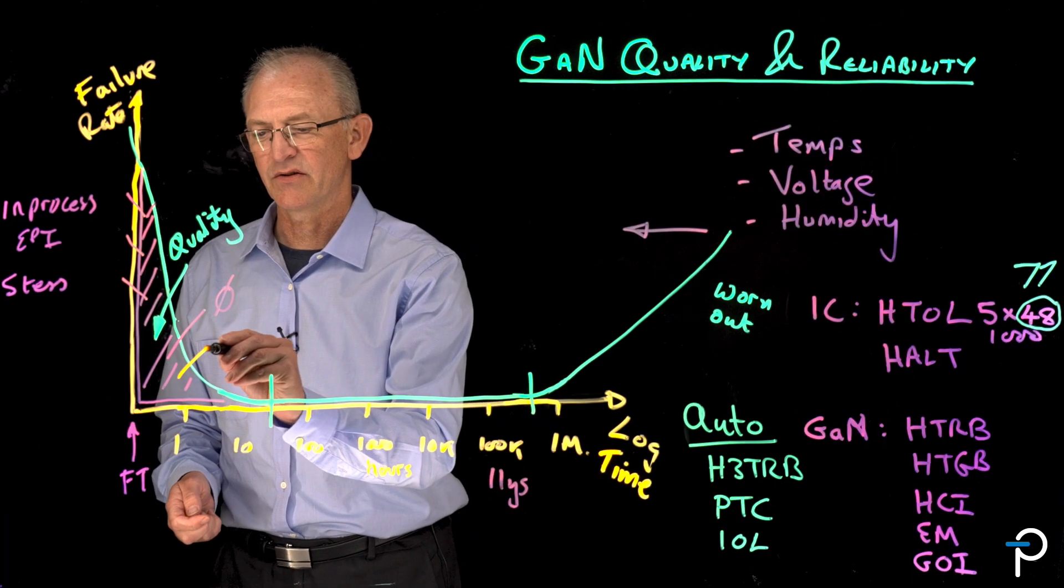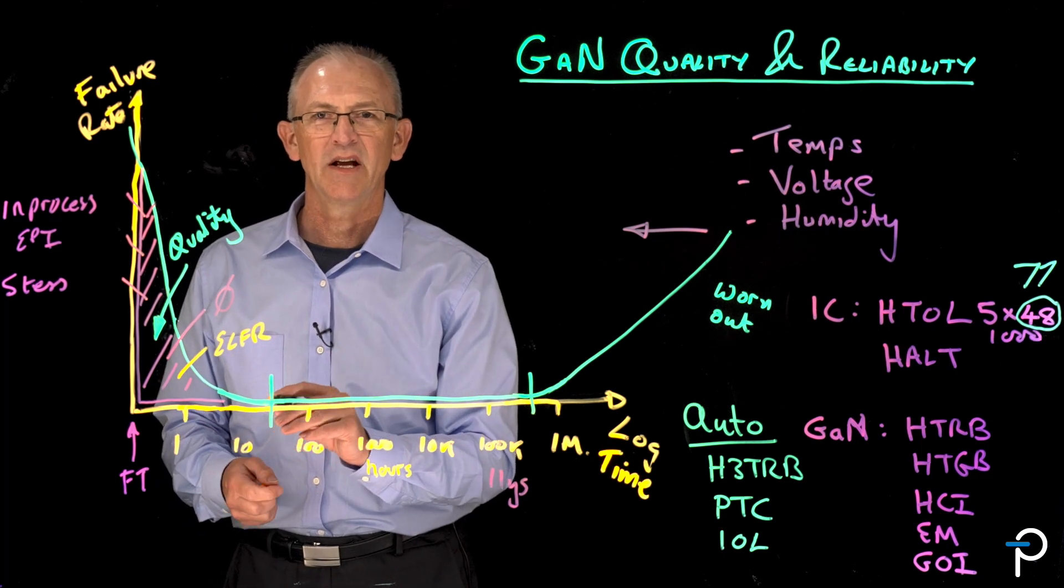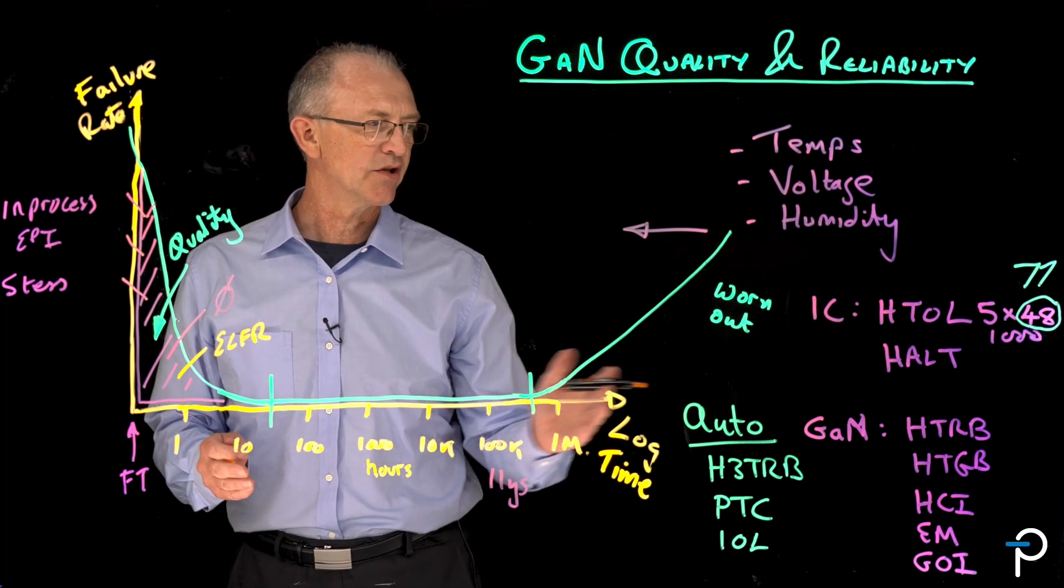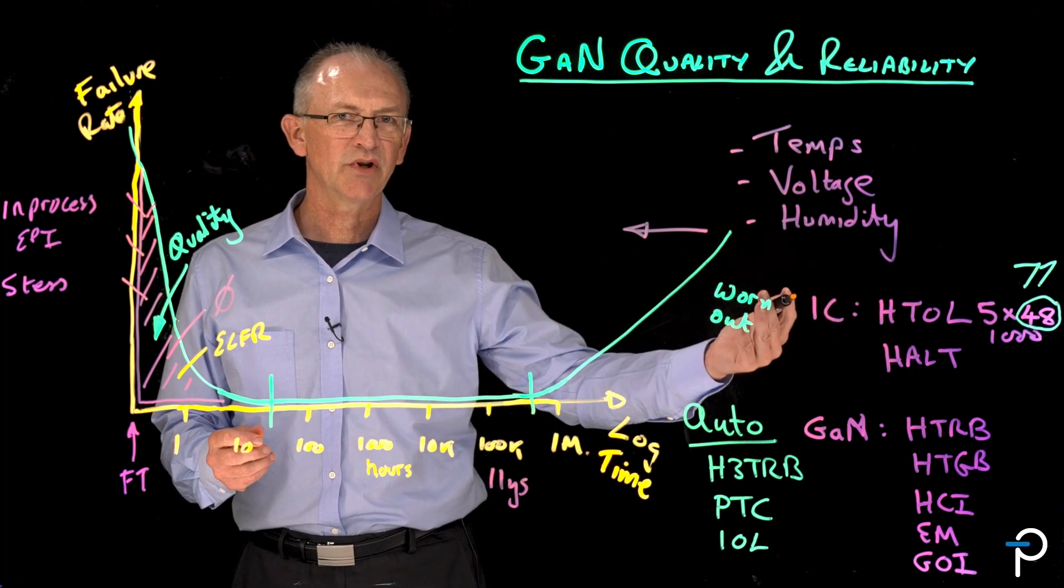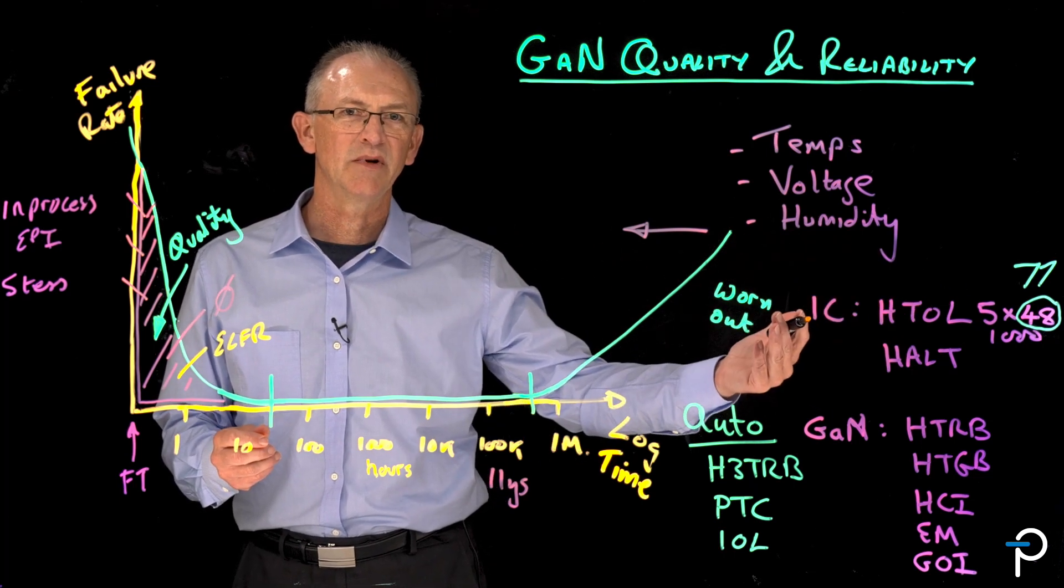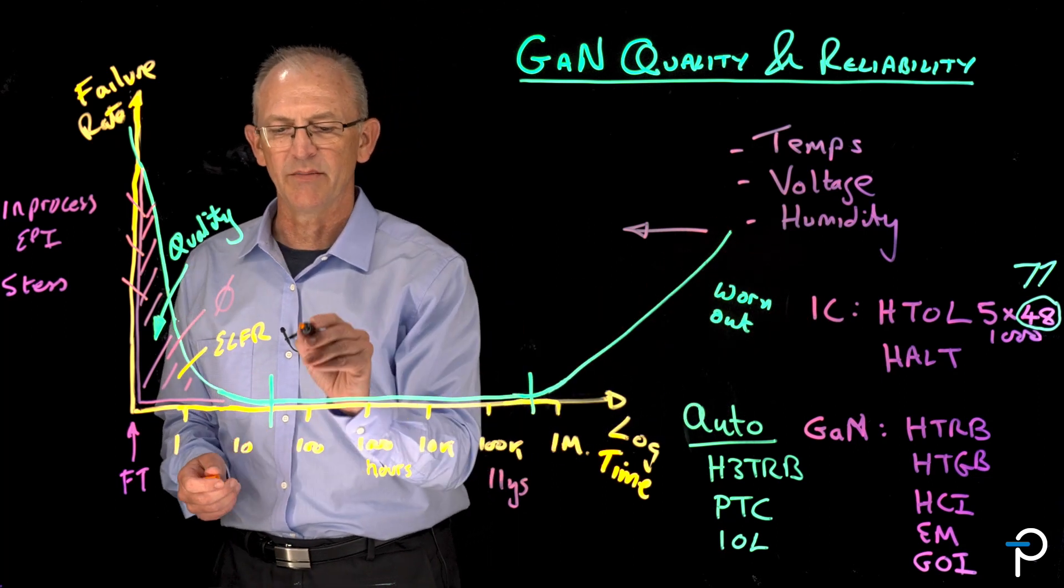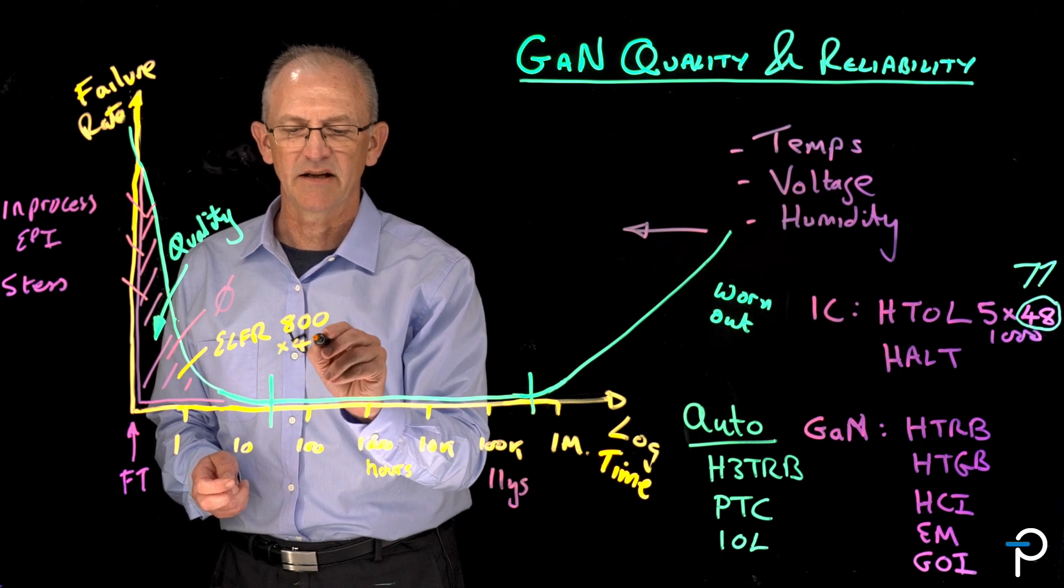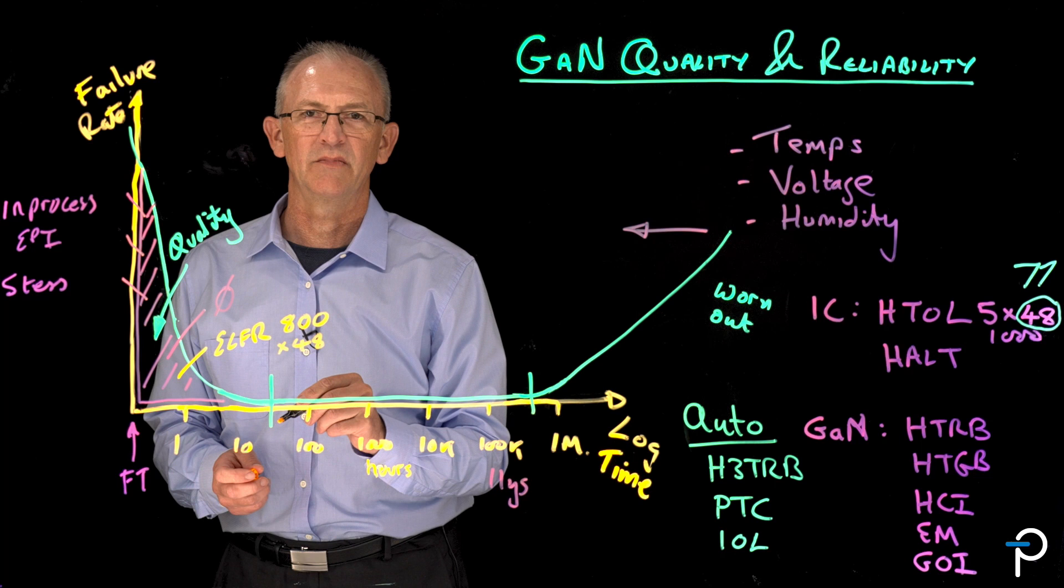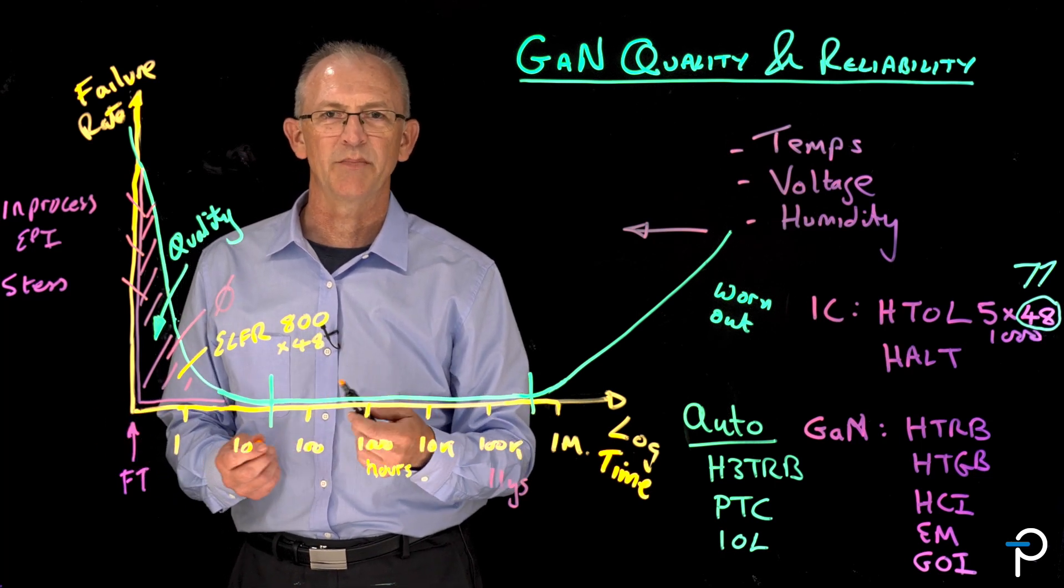So how do we validate that our in-process monitors and our yield improvements and our final test regime are going to yield a perfect product stream out of the other side? And the way we do that is with a test called ELFR, early life failure rate. And that's highly analogous to high temperature op life. But instead of doing a small number of parts for a long time, we do a large number of parts for a relatively short time. And in this case, it's 800 parts for 48 hours. Multiple lots obviously to ensure that we don't have any process lot dependencies.